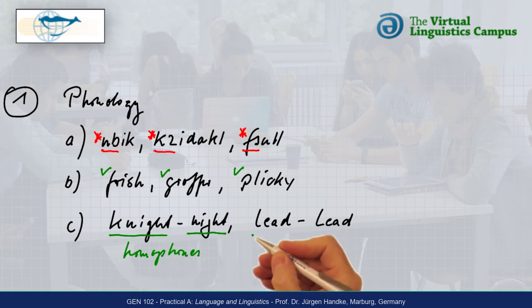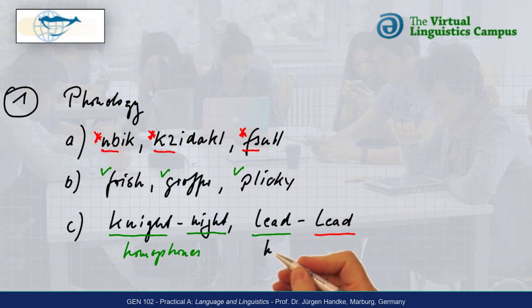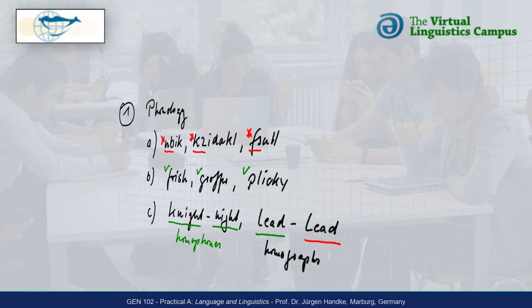Lead and the second item led, by contrast, are homographs — that is, they are words with identical orthography but different pronunciation.